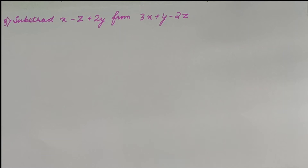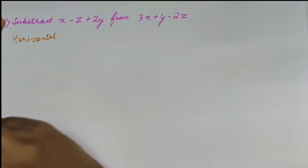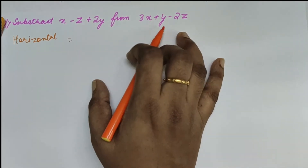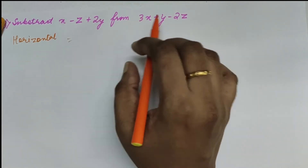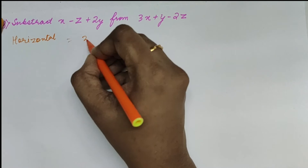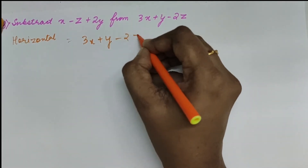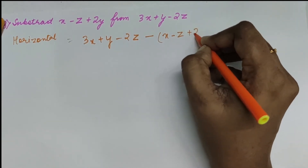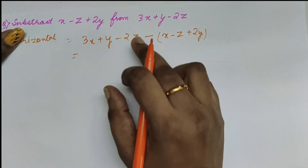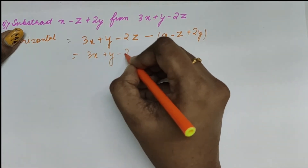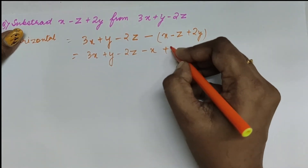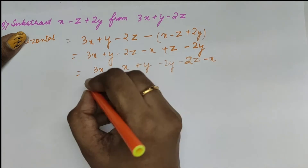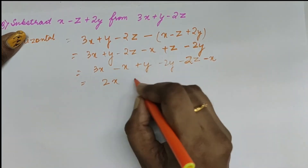Let us do it using both methods — horizontal and column. In the horizontal method, the question is: subtract x minus z plus 2y from 3x plus y minus 2z. Because it says 'from,' we write 3x plus y minus 2z first, then put a minus sign and place the first expression inside brackets. When we open the bracket, it becomes minus x plus z minus 2y. Grouping like terms, we get 2x minus y minus z.